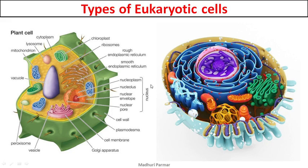The common thing in both plant and animal cells is they both have an enveloped nucleus — they have a nuclear membrane, and inside that nuclear membrane your genetic material or DNA is enclosed.